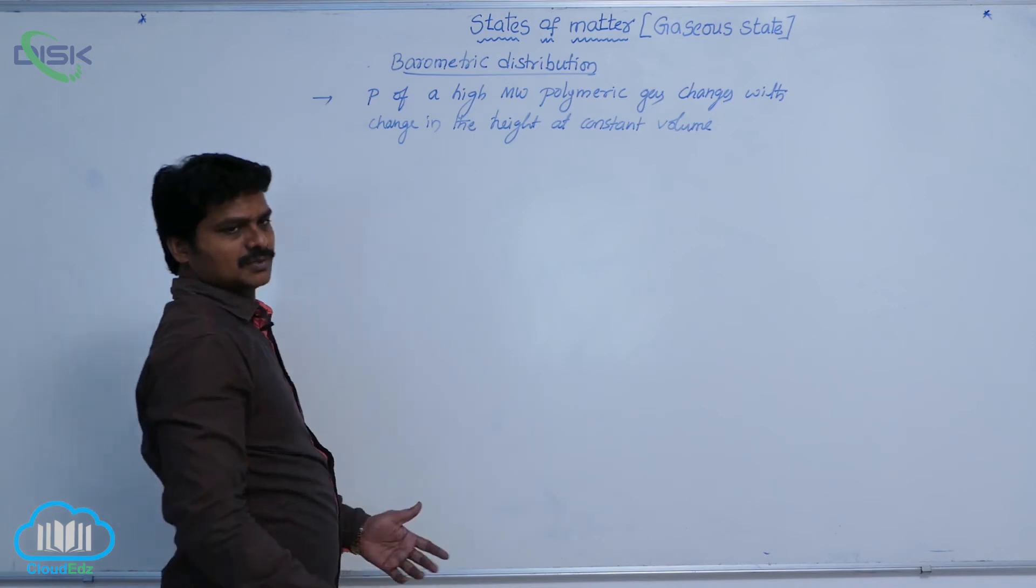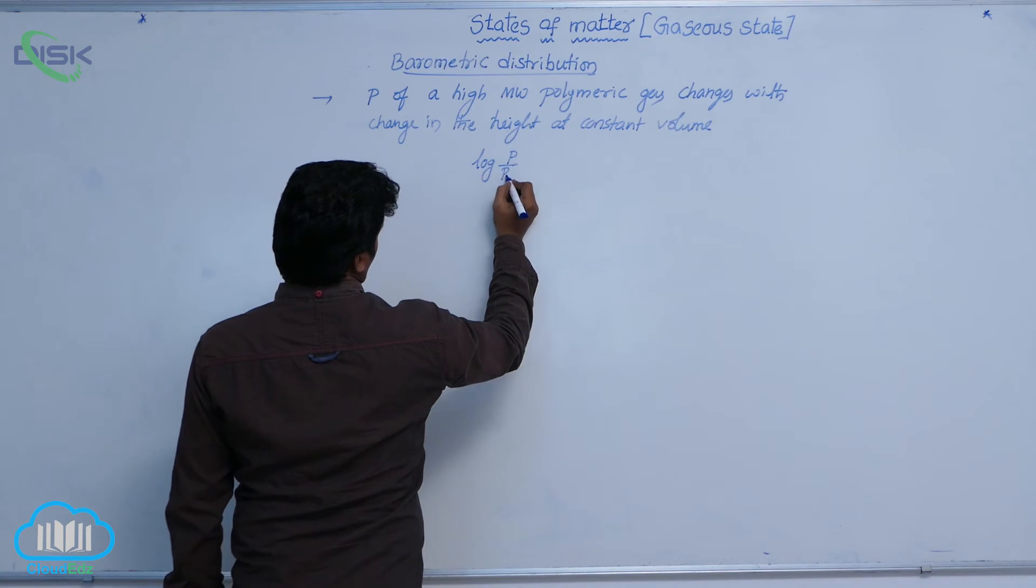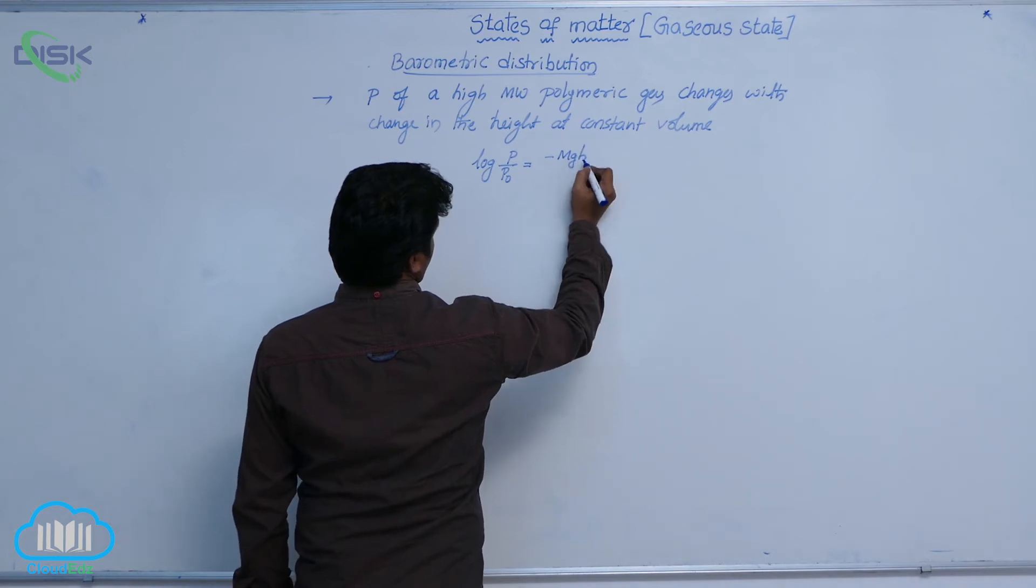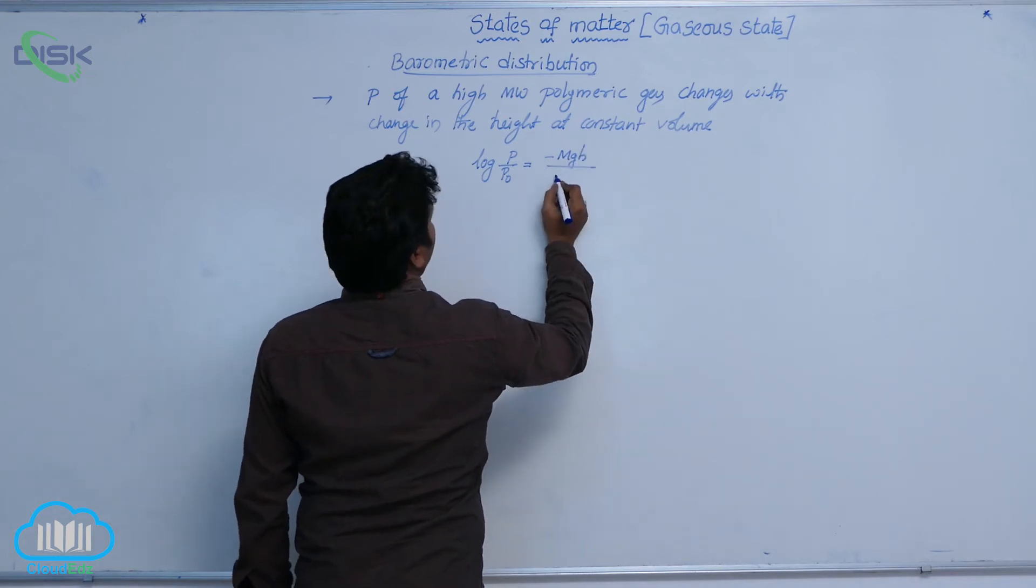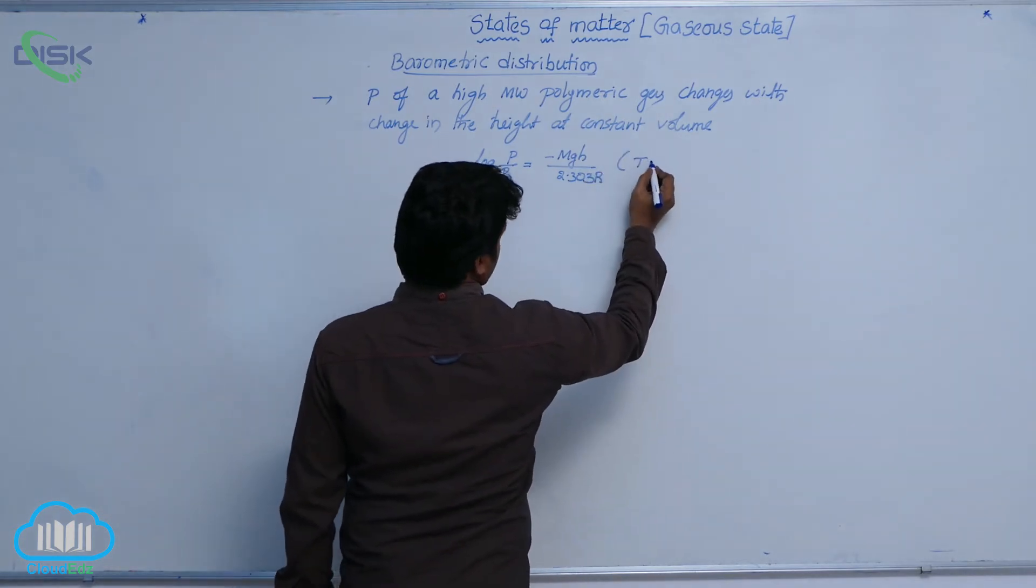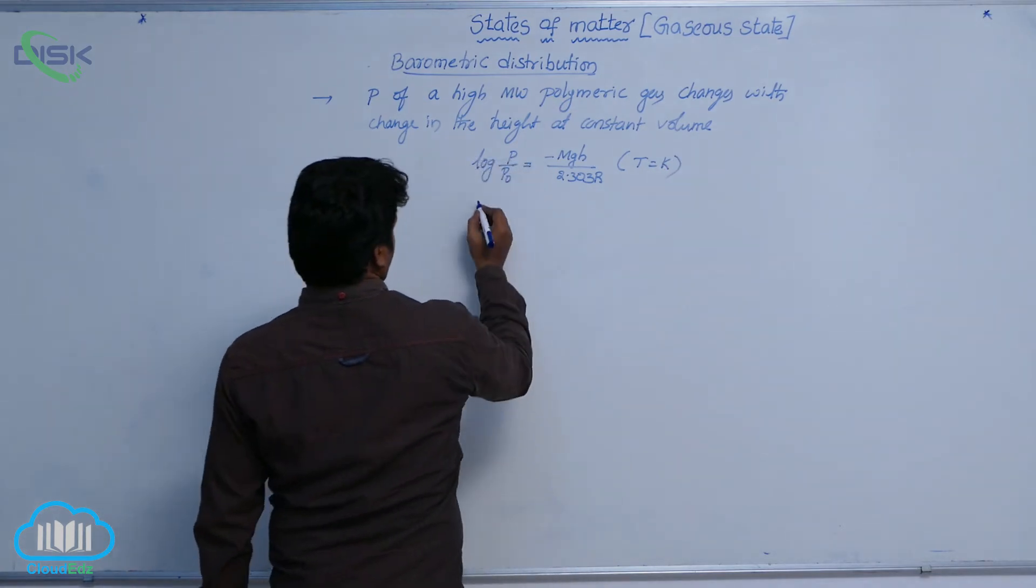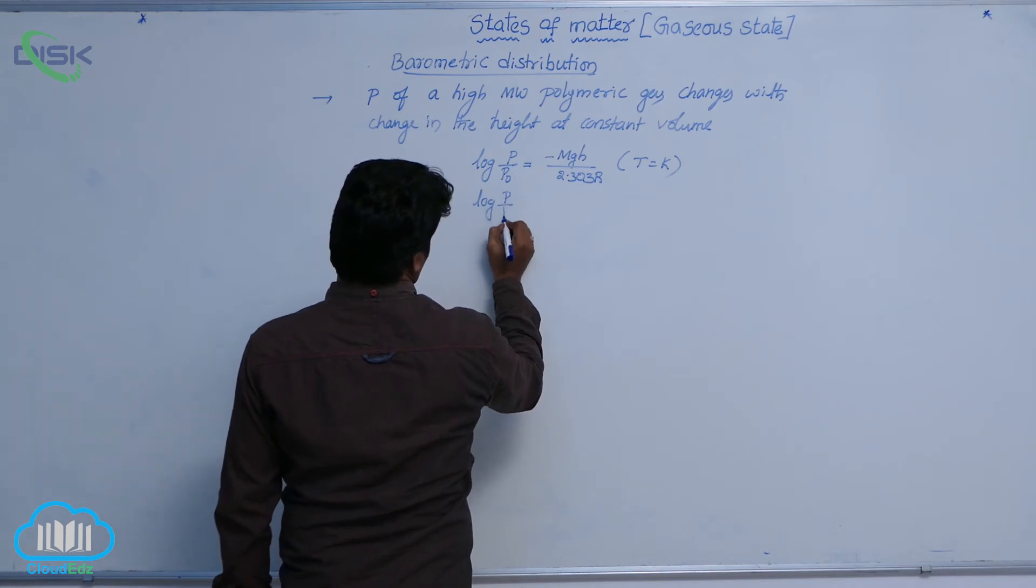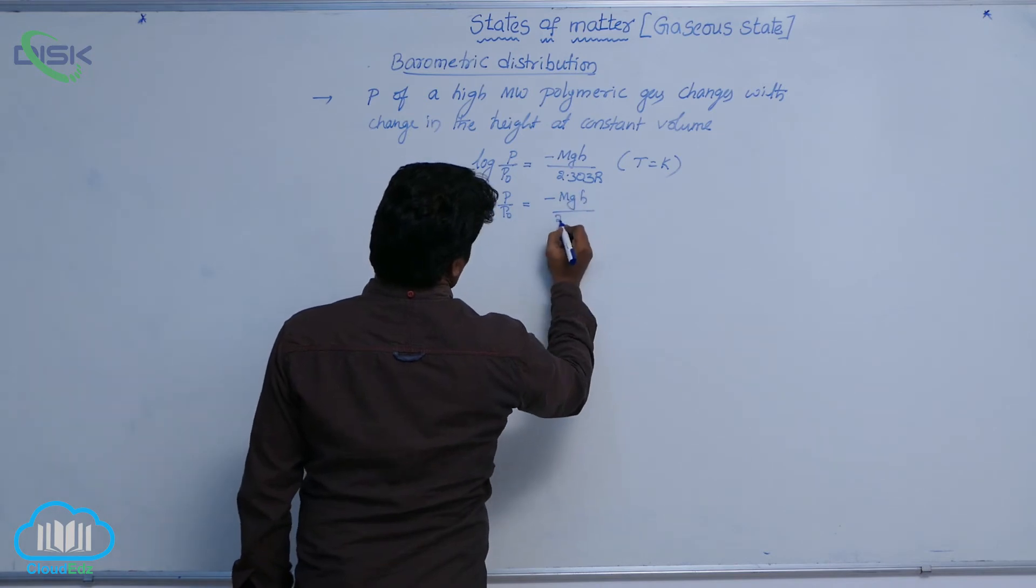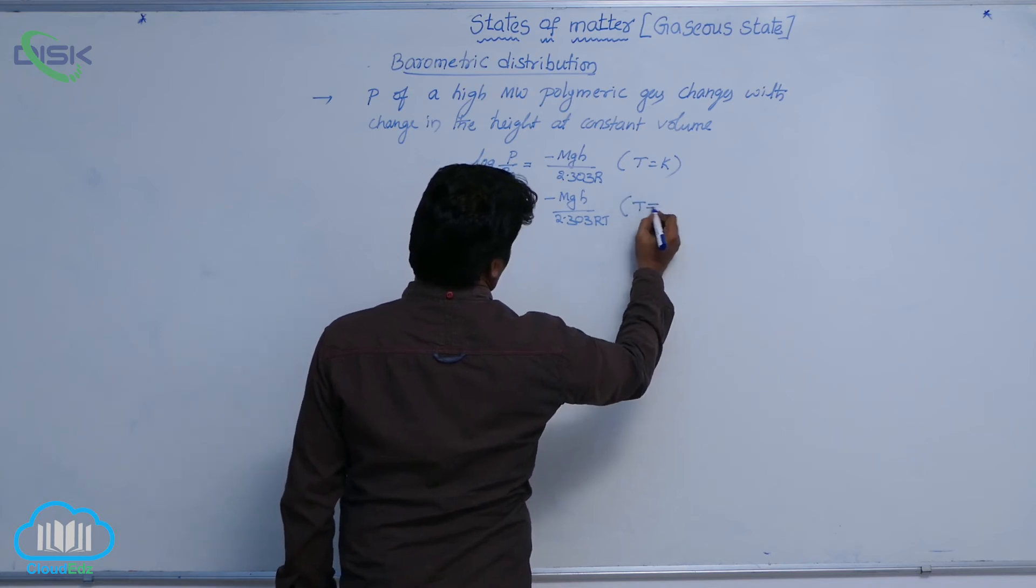Now, in this, the expression used is log of P by P naught equals to minus MGH by 2.303 into R. This is the formula. Here, T is constant. If T is not constant, then the formula is log of P by P naught equals to minus MGH by 2.303RT. This is the formula if T not equal to constant.